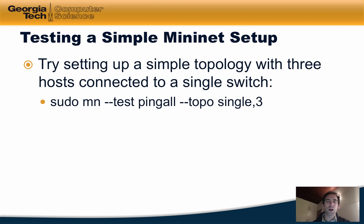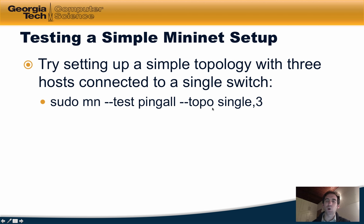First, we'll try setting up a simple topology with three hosts connected to a single switch. You can do this by typing the following at the command line in the virtual machine that you have downloaded as part of the assignment for this week. This first runs the Mininet launcher, then runs a test ping all among the hosts in the topology. The topology, specified with the topo option, is a single switch topology with three hosts connected to it.